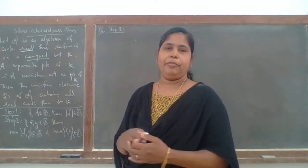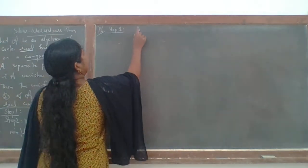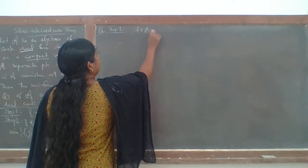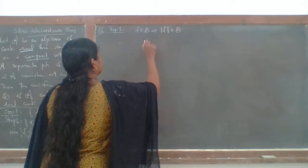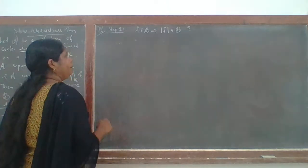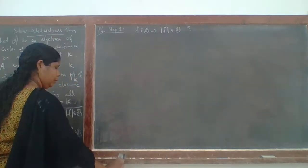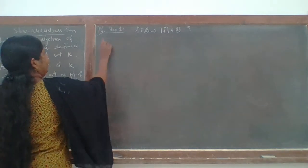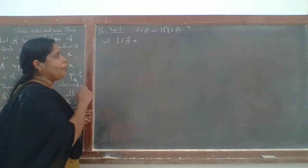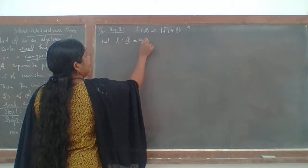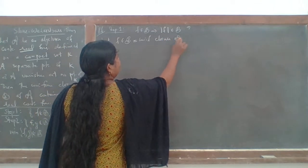Let us prove Step 1. What we want to prove is: F belongs to B implies |F| belongs to B. So this is what we want to prove. Choose an F in B. Let us prove F is an element of B. And what is B? B is the uniform closure of A.